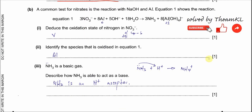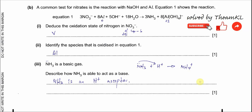Part B: A common test for nitrate is a reaction with sodium hydroxide and aluminum. Aluminum reacts with hydroxide and nitrate to form ammonia. In the lab, we use damp red litmus paper to test for the presence of NO3⁻ via the ammonia produced. The ammonia will turn the red litmus paper blue.